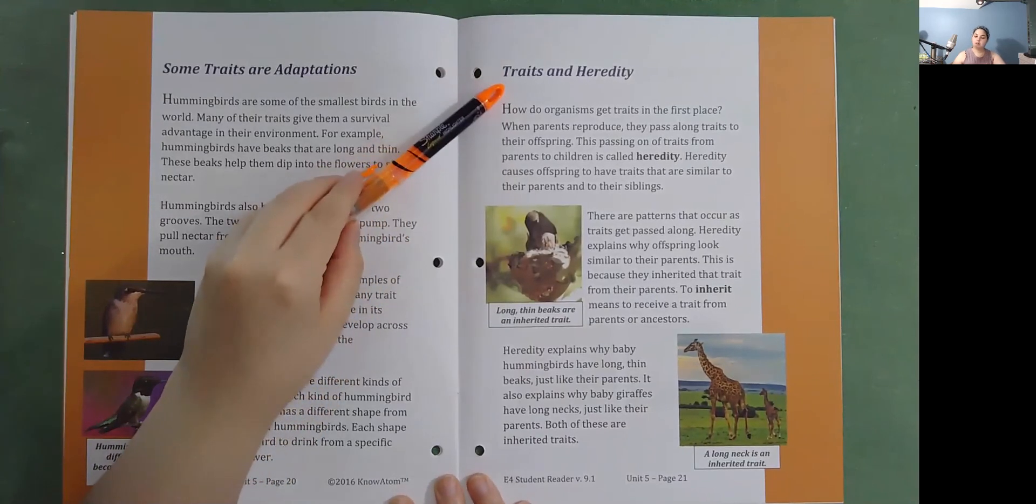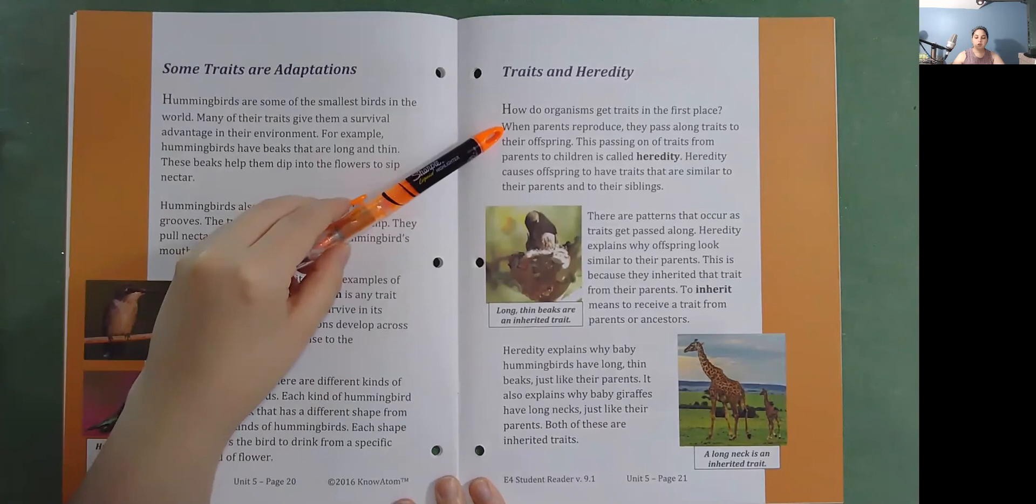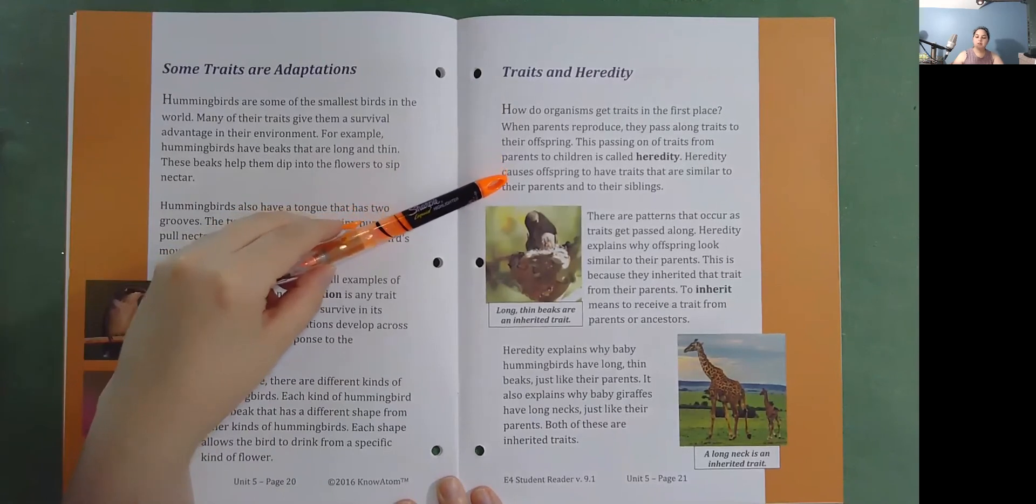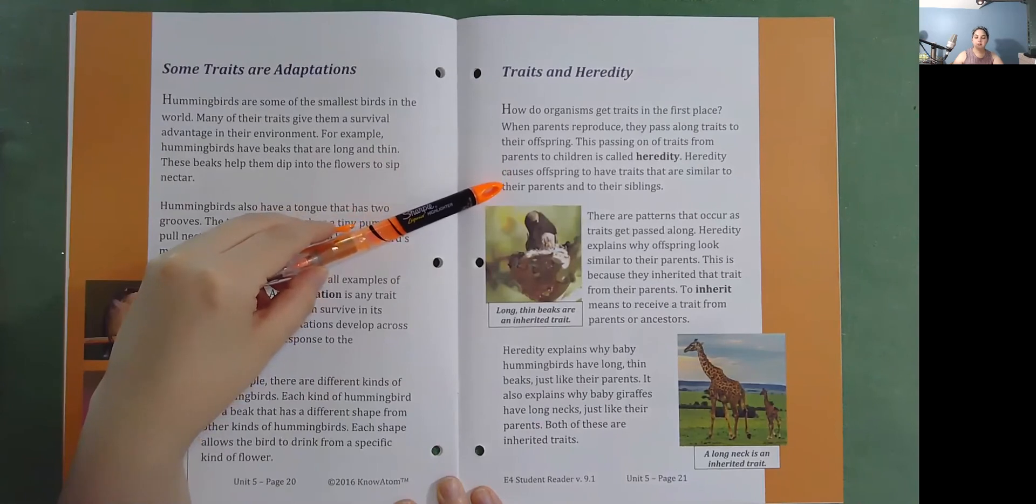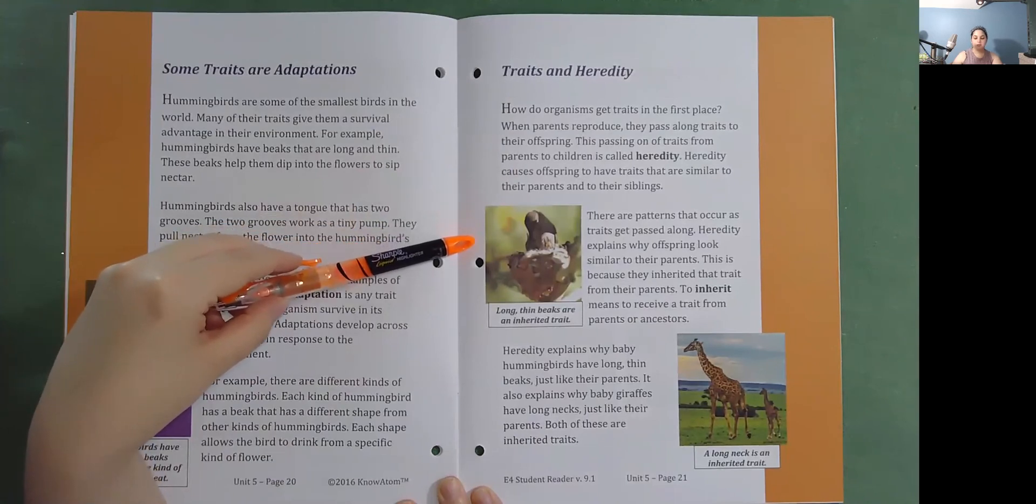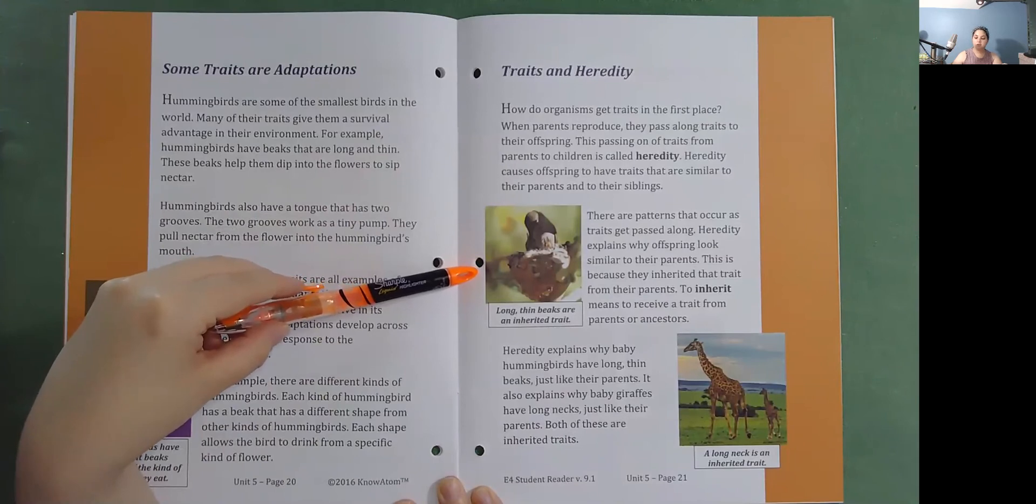Traits and heredity. How do organisms get traits in the first place? When parents reproduce, they pass along traits to their offspring. This passing on of traits from parents to children is called heredity. Heredity causes offspring to have traits that are similar to their parents and to their siblings. There are patterns that occur as traits get passed along. Heredity explains why offspring look similar to their parents. This is because they inherited the traits from their parents. To inherit means to receive a trait from parents or ancestors.